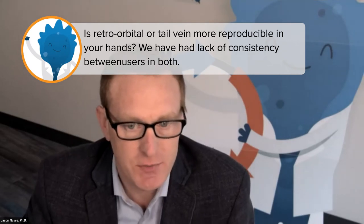Is the retro-orbital or tail vein more reproducible? Some people have had a lack of consistency between the two. Based on our experience and our collaborators' experience, retro-orbital and tail vein injections, if done correctly, will yield very similar results because they are both IV injections in terms of considerations. However, in mice, C57 is actually more challenging for tail vein injections compared to retro-orbital injections, so we usually recommend retro-orbital. But if you feel very comfortable with tail vein injections, we don't think it will create a huge difference. It's really almost 50/50 between people doing retro-orbital and tail vein for mice in the Clover repository.